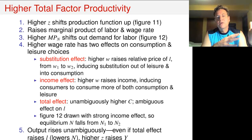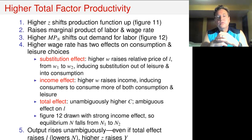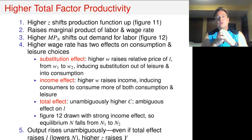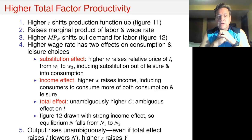Higher productivity is going to shift the marginal product of labor out and therefore increase the demand for labor. But the higher wage is then going to trigger the substitution and income effects that we talked about before. A higher wage is going to increase the relative price of leisure, and that then induces substitution out of leisure and into consumption — that's the substitution effect.